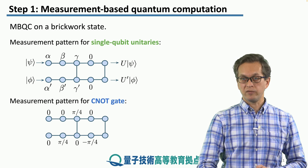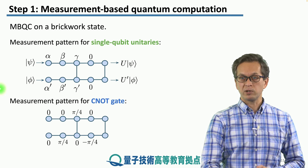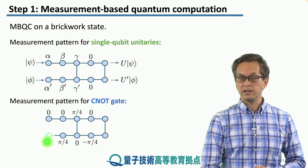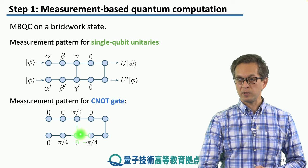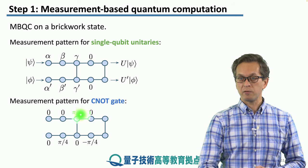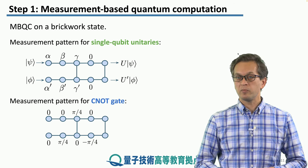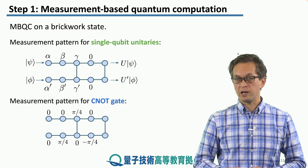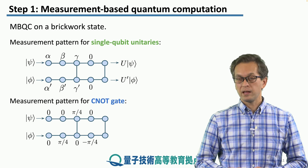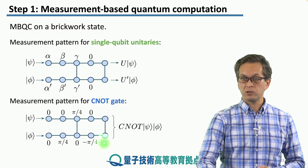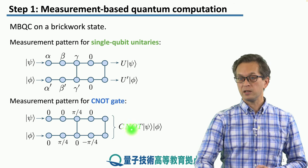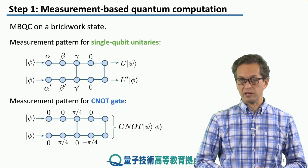If you want to perform a CNOT gate, then the measurement pattern is the following. We start measuring both qubits in the X basis, and most of the qubits are measured in the X basis apart from these three, which are measured at an angle of pi over 4 or minus pi over 4. And if our input states are psi and phi, then the output state of the two qubits at the end of the measurement is a CNOT applied between the input states.